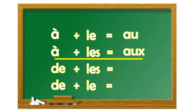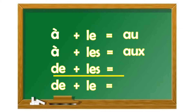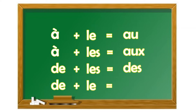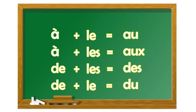En troisième lieu, l'article contracté est formé par la préposition « de » plus l'article « les » au pluriel, pour les choses au pluriel — ça nous donne « des ». En dernier lieu, la préposition « de » plus l'article « le » nous donne « du ». Passons maintenant aux exemples pour comprendre l'utilisation de cet article contracté.